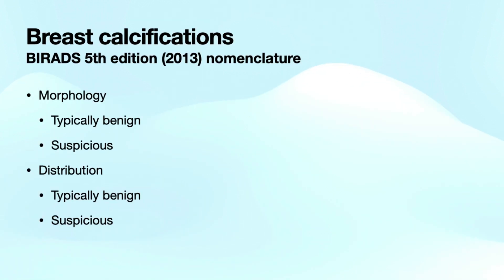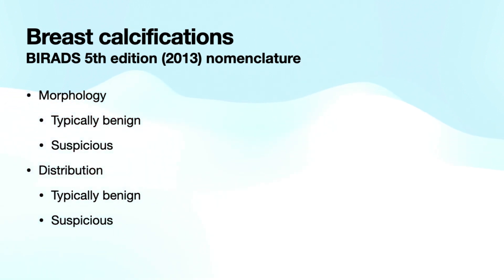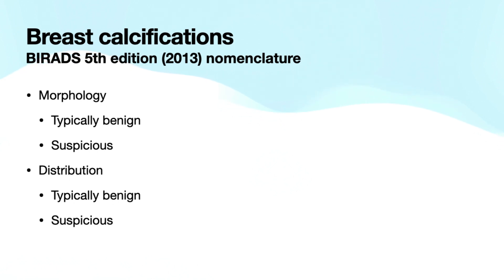I have no disclosures. The first thing we're going to discuss is the approach to evaluating calcifications in the breast. When you're evaluating calcifications, you're really looking at two main criteria: the first being the morphology or the shape of the individual calcifications that you see, and the second being the distribution throughout the breast or both breasts, including determining if something is multifocal or bilateral.